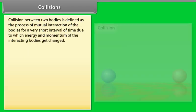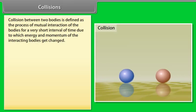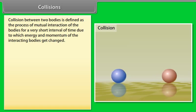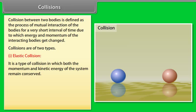Collisions. Collision between two bodies is defined as the process of mutual interaction of the bodies for a very short interval of time due to which energy and momentum of the interacting bodies get changed. Collisions are of two types: Number 1, elastic collision. It is a type of collision in which both the momentum and kinetic energy of the system remains conserved. Number 2, inelastic collision.